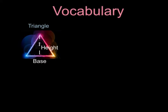The next important word is height. The height of a figure is the shortest distance between the base and the vertex on the opposite side. A dashed line segment, like this one, shows height. It is perpendicular to the base, so it meets the base at a right angle. The height can be shown by a line segment outside of the figure when the triangle is obtuse — the line segment is perpendicular to an extension of the base.